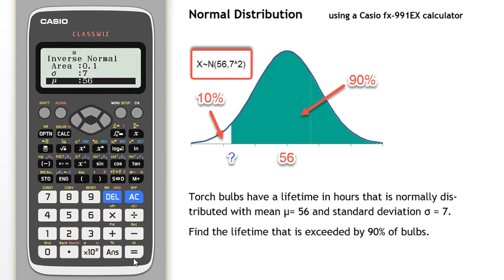All the data items are now in. Hit the equals button one more time and we find that the data value is 47.029. So it's 47.0 hours, or to the nearest hour, 47 hours.